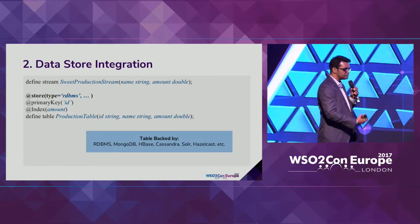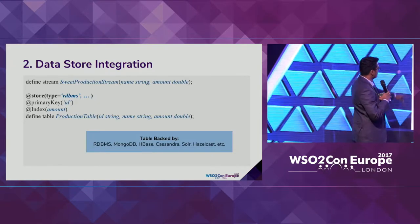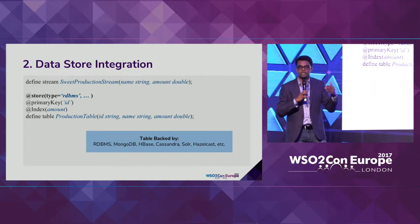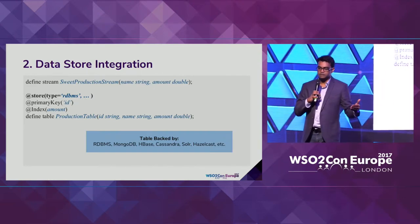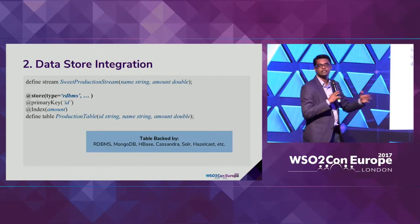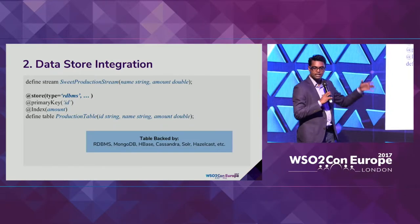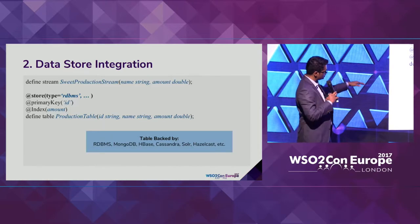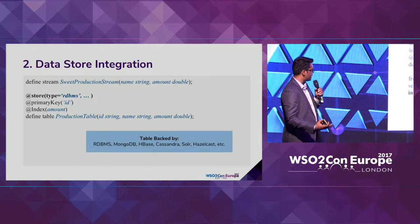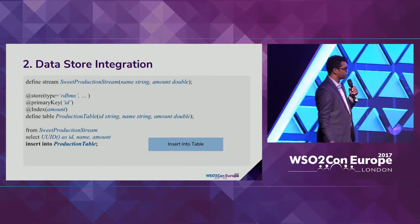If you want to back the table with an actual database, you can specify a store annotation — supporting physical RDBMS, HBase, Cassandra, Solr, and others. We can do preprocessing and insert into that store. Through the same API, we can access the data. A simple insert into the table can be written inline, and update-or-insert operations are also supported.